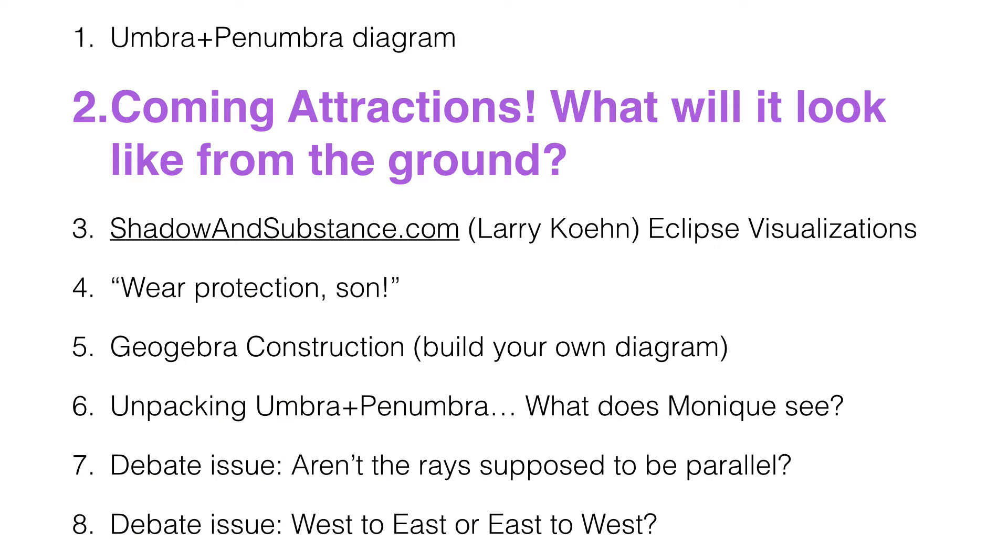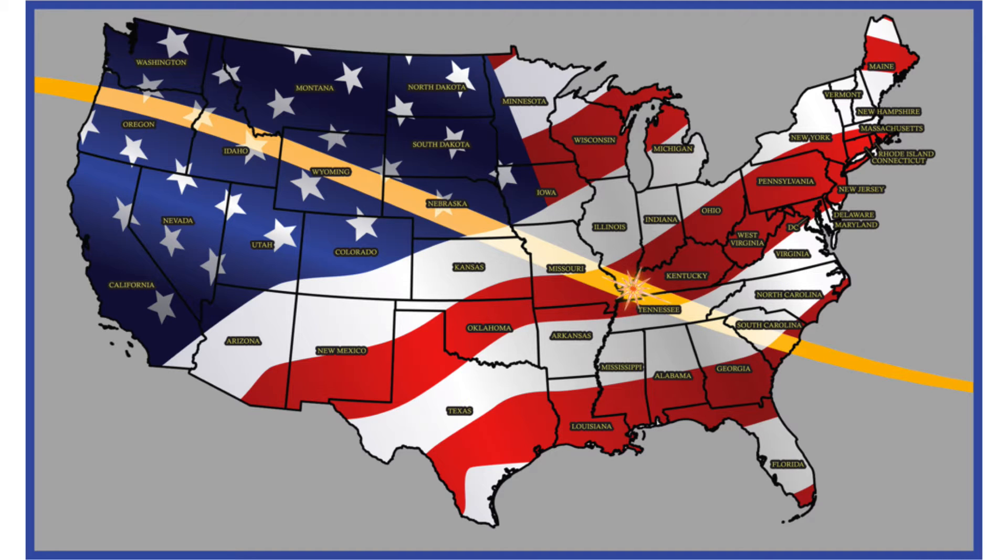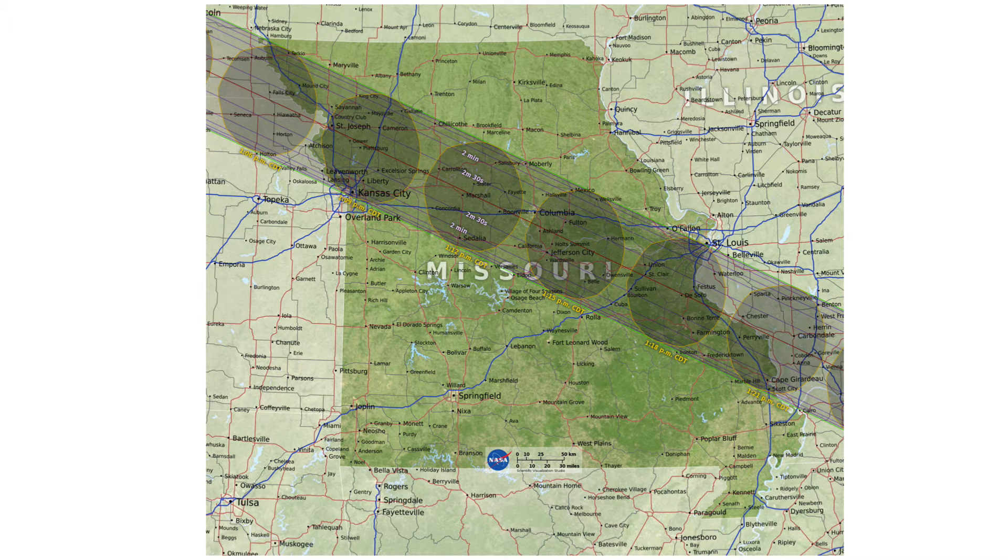So let's take a look at a couple of animations about what it will look like from the ground. You know that the upcoming 2017 eclipse is going to cross the continental United States. The path of totality will cut through a bunch of states. We're going to zoom in on Missouri, and you can actually see the size of the umbra on the state of Missouri.